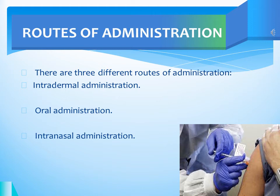In the intramuscular route, vaccines are injected into muscle tissues. DTP along with hepatitis A and B vaccines are administered following this route. In the subcutaneous route, vaccines are injected in the area just beneath the skin into the fatty connective tissue. MMR and IPV are examples of subcutaneously administered vaccines.